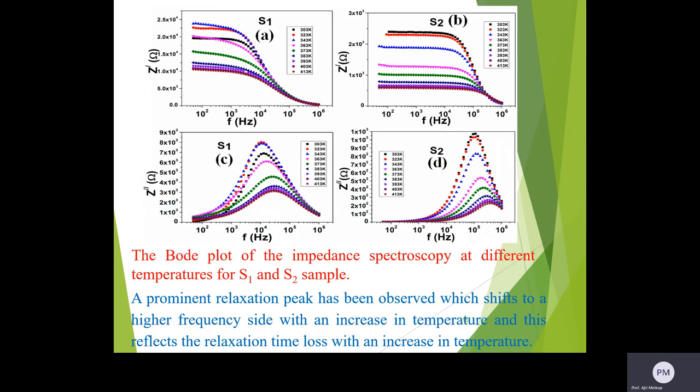The Bode plot of the impedance spectroscopy at different temperatures of S1 and S2 sample have been shown here. A prominent relaxation peak has been observed which shifts to the higher frequency side with an increase in temperature, and this reflects the relaxation time loss with an increase in temperature.